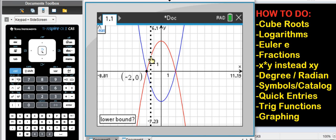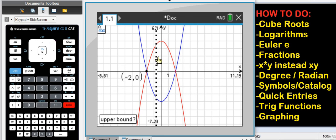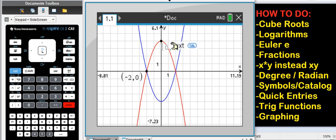Lower bound is really left bound. Somewhere left of the maximum. Press enter. Upper bound is to the right. Press enter. And you can see the maximum is at 0 for drag, the point, wherever you want it to be.